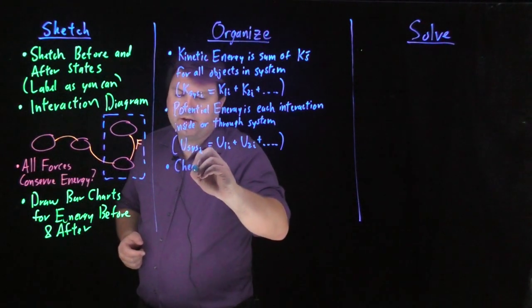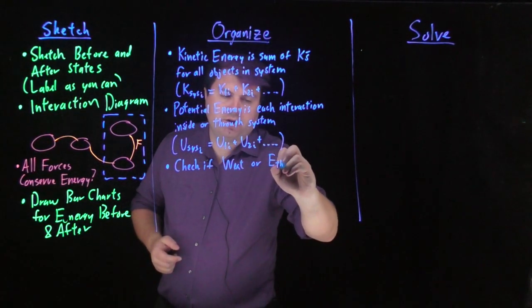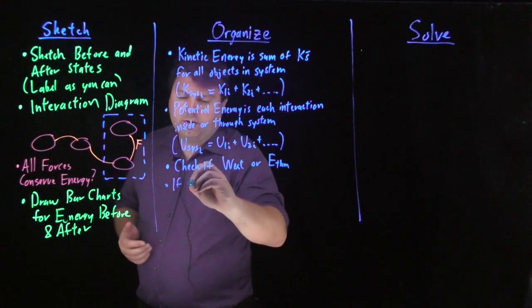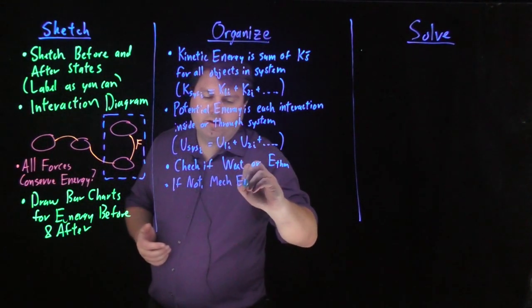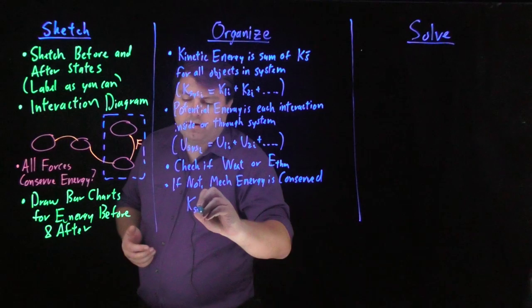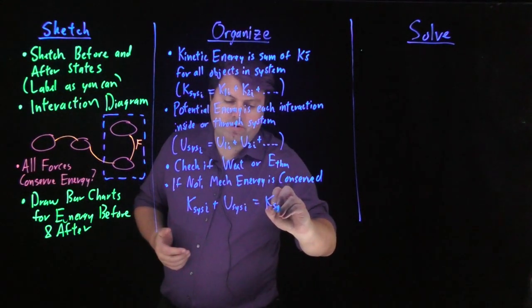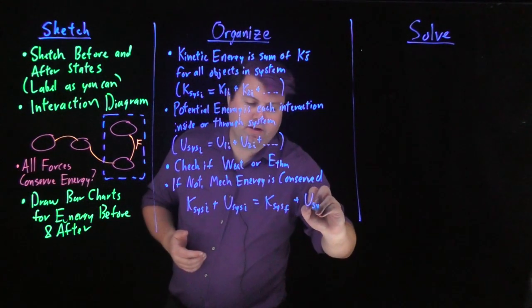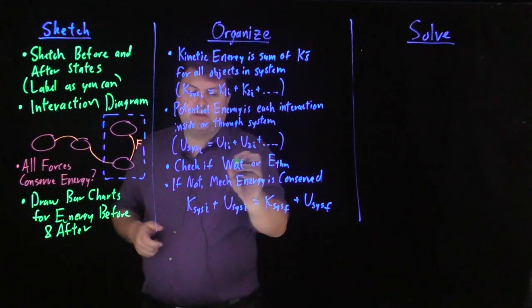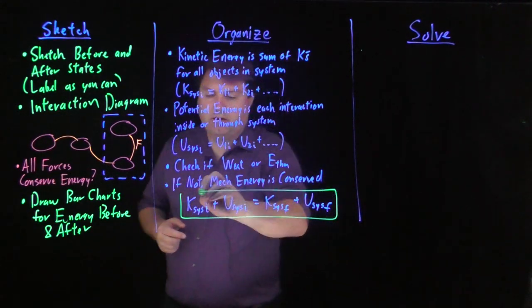Then we want to check if we have any external work or any change in thermal energy. If we don't, then mechanical energy is conserved and we have initial kinetic energy plus initial potential energy equals final kinetic energy plus final potential energy. If we can say we don't have external work or external thermal energy through a choice in our system, then we can use this.